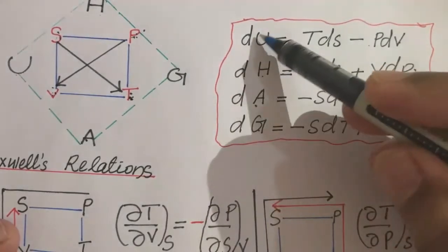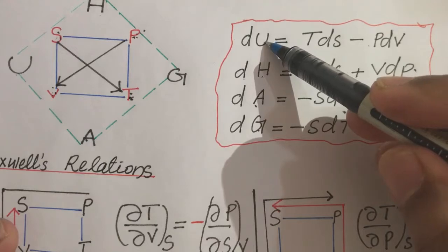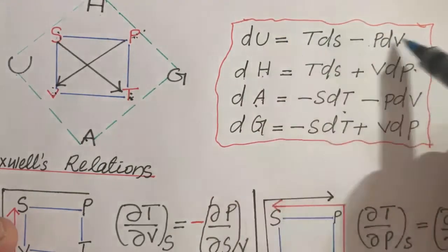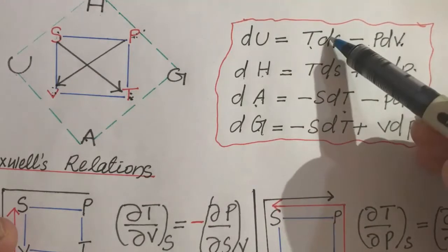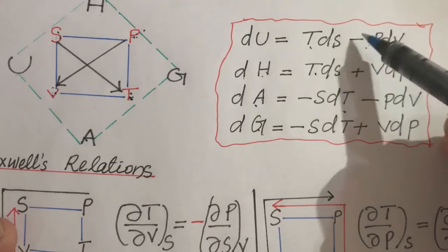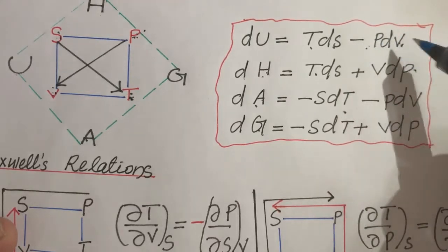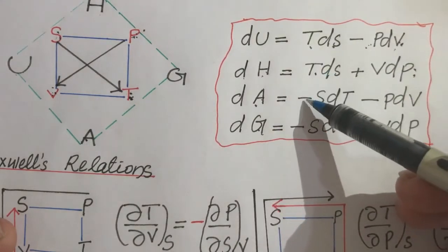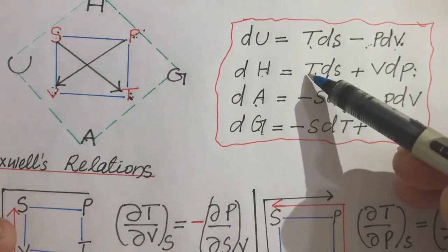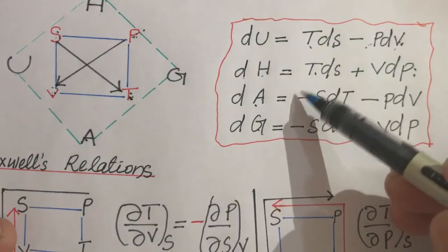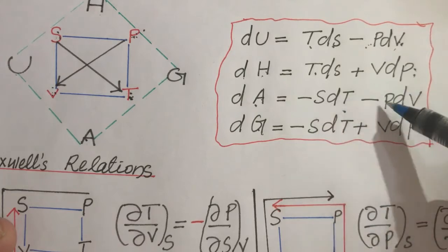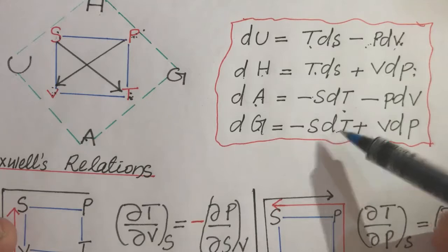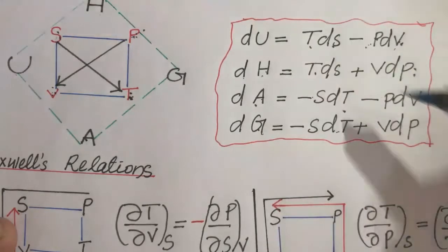Let's write the sequence as UHAJ. You can memorize one of the equations — that is T dS − P dV — then change the sign and change the parameter to get the next: V dP. Then change the sign and parameter again for −S dT. Repeating: −P dV, −S dT, +V dP. This sequence can be repeated to derive all four functions.